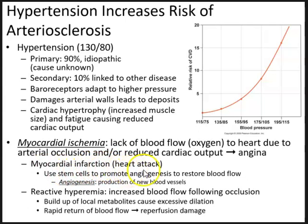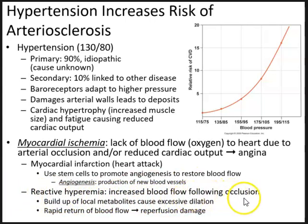Myocardial infarction, also known as a heart attack, occurs when occlusion of a blood vessel causes the muscle in that area to become ischemic and potentially die. Stem cells can be used to promote angiogenesis — the production of new blood vessels — to restore blood flow and compensate for the lack of circulation to the area. Reactive hyperemia occurs following the occlusion, where a buildup of local metabolites causes excessive dilation, and this rapid return of blood flow can cause reperfusion damage.